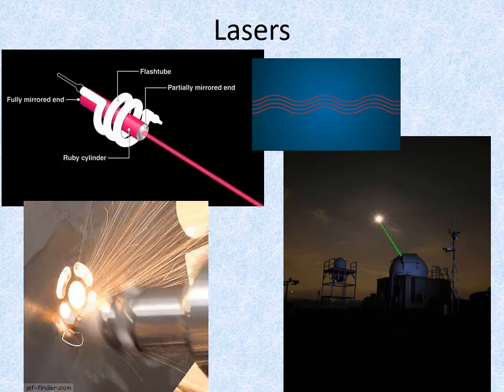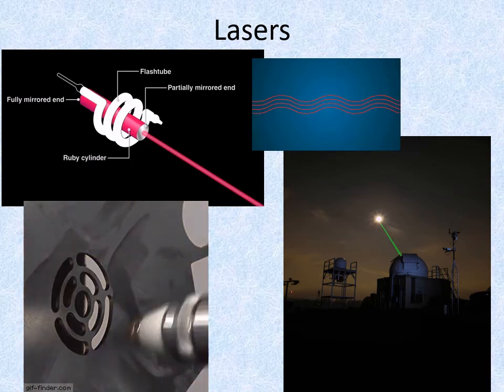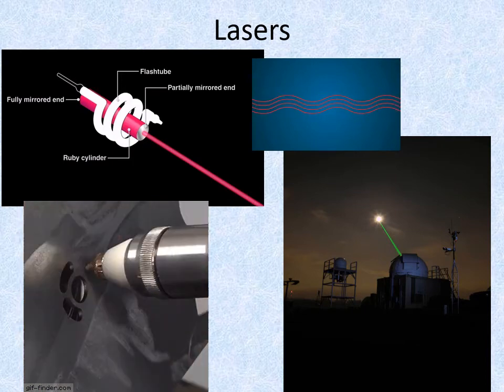Because the photons are in lockstep with each other, they don't spread out like a normal light beam. A laser beam hitting the moon, over a quarter of a million miles away, has a diameter of only four miles.